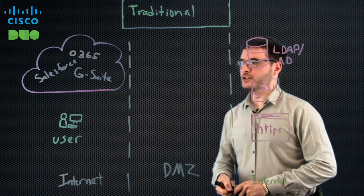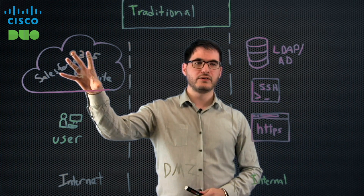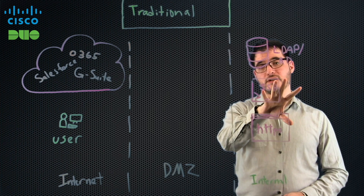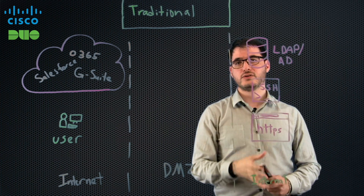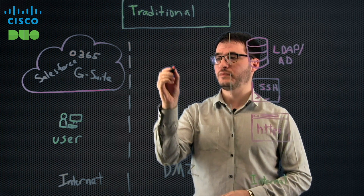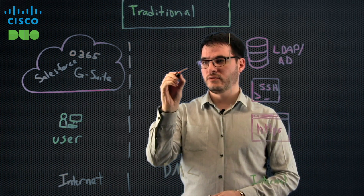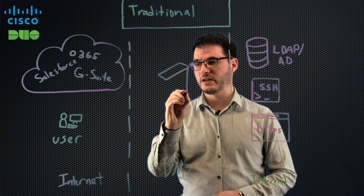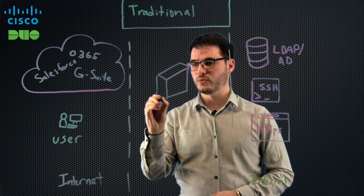So in the traditional model, we've got our apps that are potentially in the cloud, and we've got our apps and servers and services that are on-premise. And users who are going to try to access those on-premise services traditionally use a VPN. So here in the DMZ of our network, most often there's a server, and that server is providing VPN services that users will dial into.